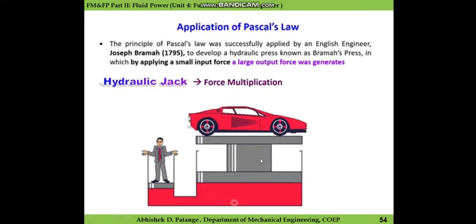Let us understand the hydraulic jack. It has confined boundaries. This hydraulic jack has two different cross-sectional areas — let us call them A and B. When a person applies their weight at the smaller piston, it creates pressure at that point. According to Pascal's law, the pressure generated is transmitted equally throughout the system. The pressure created by the weight of the person on the small piston is transmitted equally throughout all parts of the system.